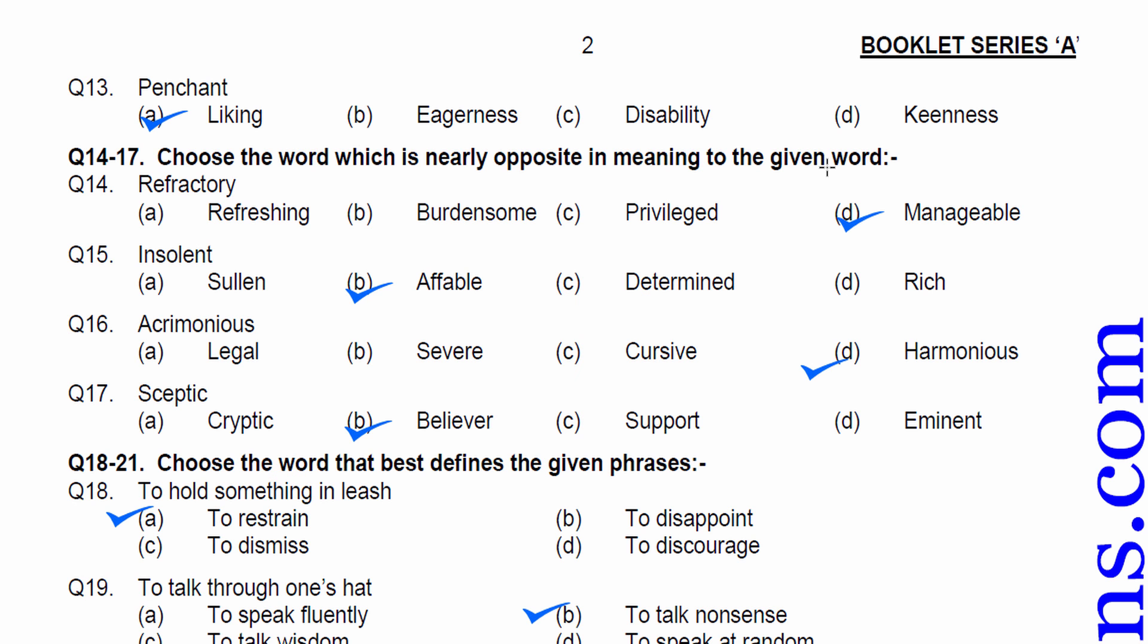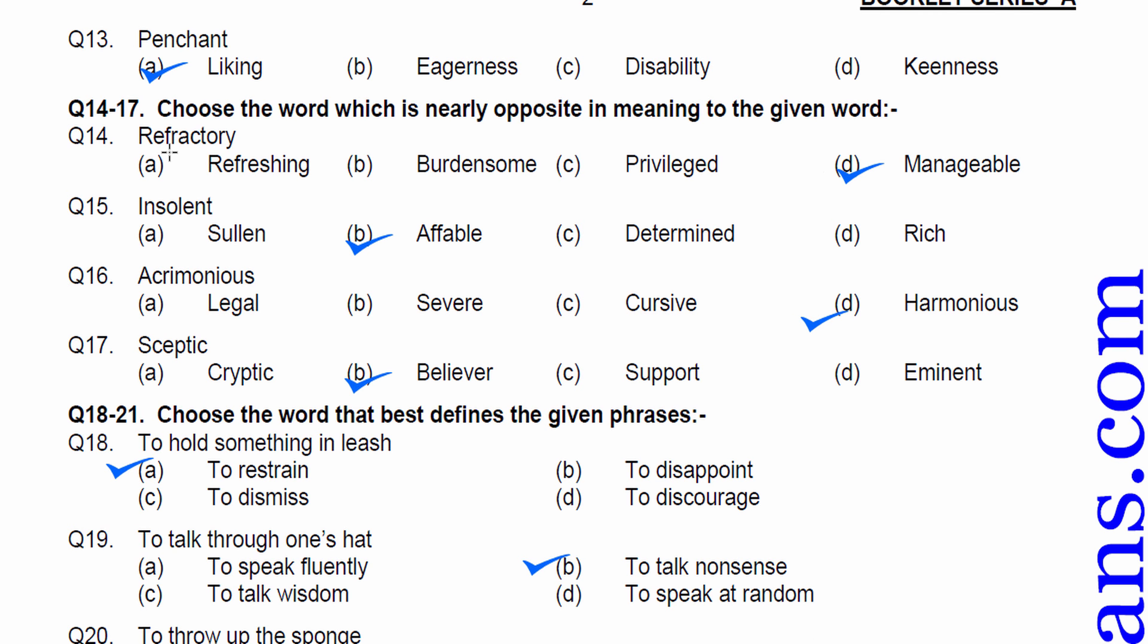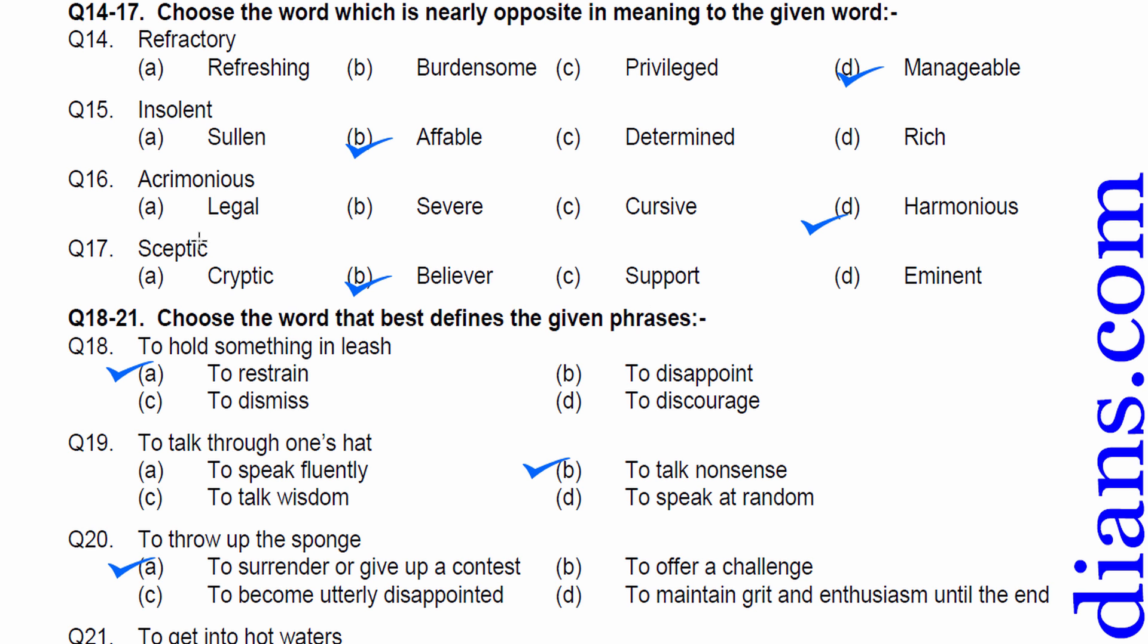Fourteen to seventeen choose the word which is near the opposite in the meaning word. That is antonyms. Fourteen is refractory means stubborn, resistant. Therefore, antonym is manageable. Fifteen. Insolent. Rude or impolite. Whereas affable means friendly. Sixteen. Acrimonious. Not in harmony. Therefore, harmonious. Option D is correct. Question seventeen. Skeptic. Doubting attitude. Believer is opposite here.